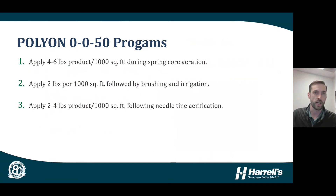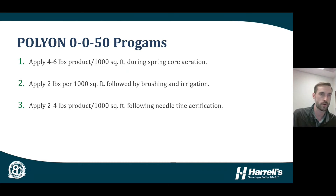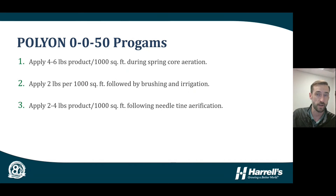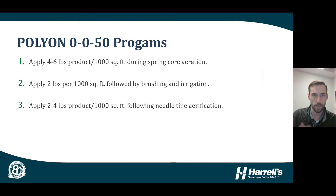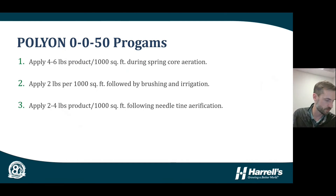Common application programs for Polyon 0-0-50 include: during spring core aeration, applying four to six pounds of product per thousand square feet — approximately two to three pounds of potassium per thousand square feet. Without core aeration, applying two pounds of product per thousand square feet followed by brushing and irrigation to move granules past the turf canopy and prevent pickup at the next mowing event. A third option is applying two to four pounds per thousand square feet following needle-tine aeration, also followed by brushing and irrigation to ensure granules settle into the holes.